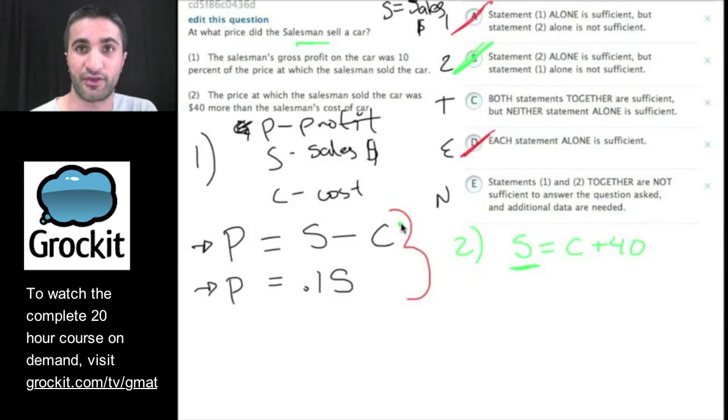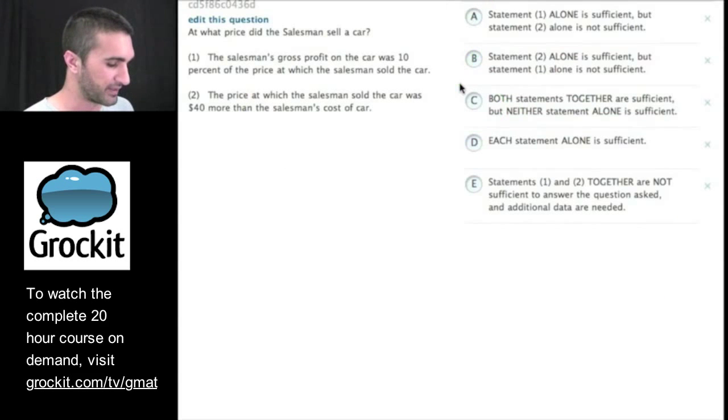So either we can put these two statements together and answer it and have sufficient data, or even together they're not sufficient and we would need more information. Let's see what we have here. If we look at this, what we have are three unknowns, three equations. Do we have enough information to figure out this question, Jake, or do we need to actually sit there and solve it? We don't need to solve it in a data sufficiency. They're not asking us for the actual number. They're just asking us if we know the price the salesman sold the car. We can plug in these equations into each other and end up solving and actually getting the answer. I'm pretty sure the answer is C.